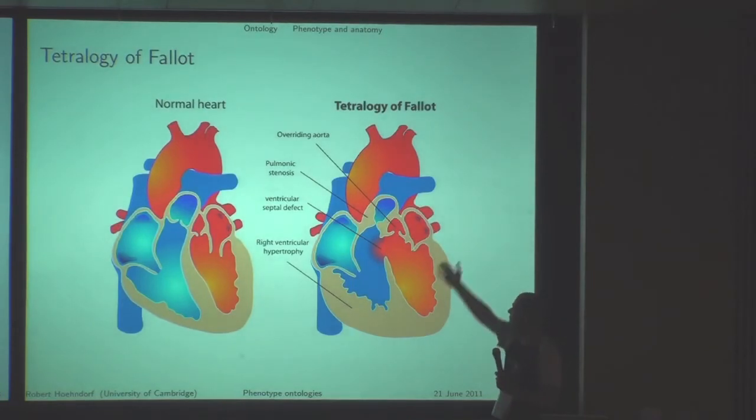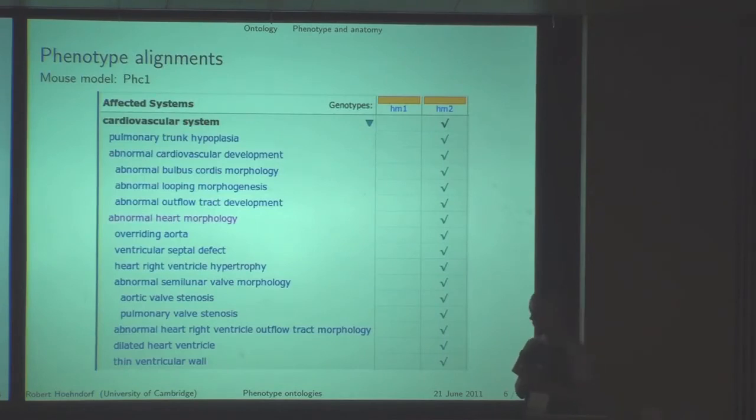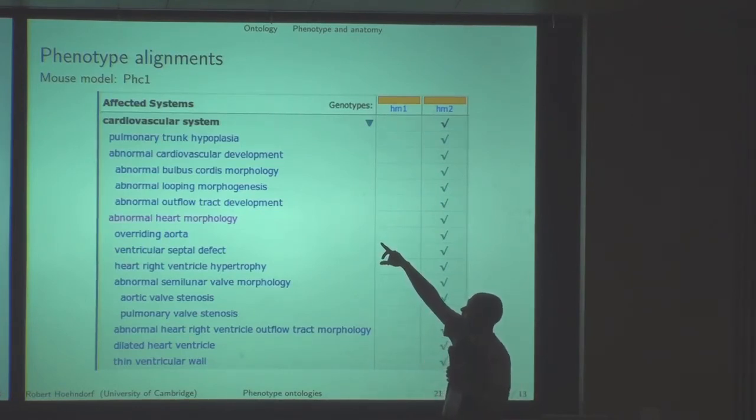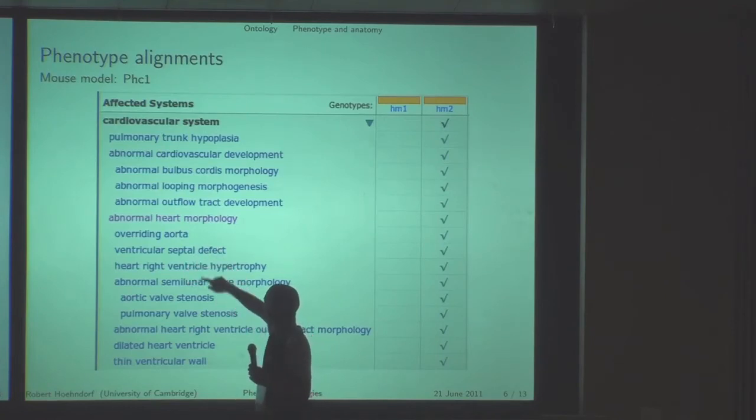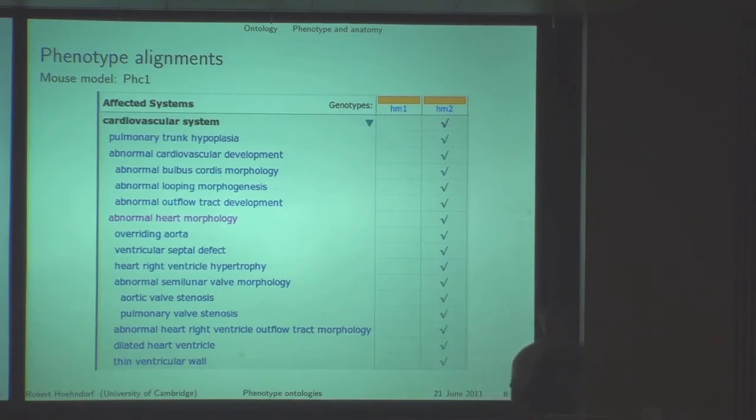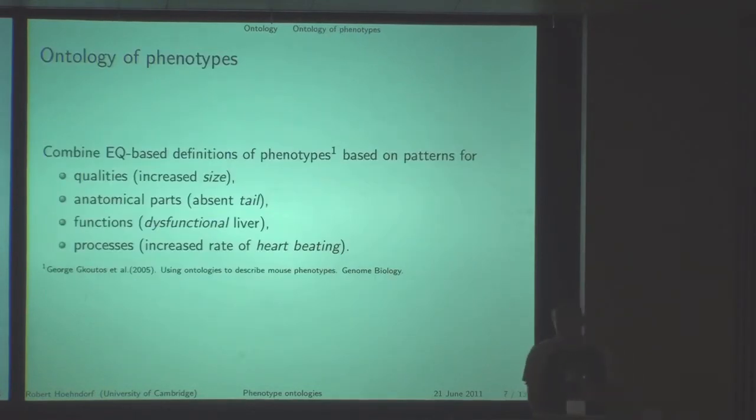So when we look at one example, this is a disease called Tetralogy of Fallot, it's a heart disease, a heritable one. It's characterized by four phenotypes: the overriding aorta, the pulmonic stenosis, ventricular septal defect, and the right ventricular hypertrophy. We can find this in a database such as OMIM, these phenotypes, and they are characterized in human terms. When we look at one of the mouse models which comes out of this IKMC effort, this is a knockout for the PHC1 gene in mice. These are some of the phenotypes. We can see there seems to be some overlap, at least judging from the names, but all of these are characterized in terms of mouse phenotypes. So formally, they have nothing in common but their label.